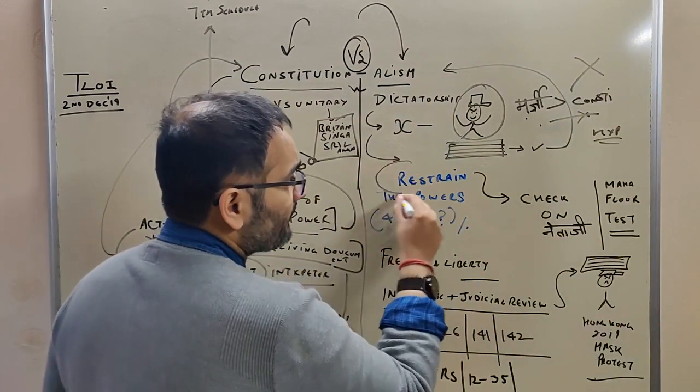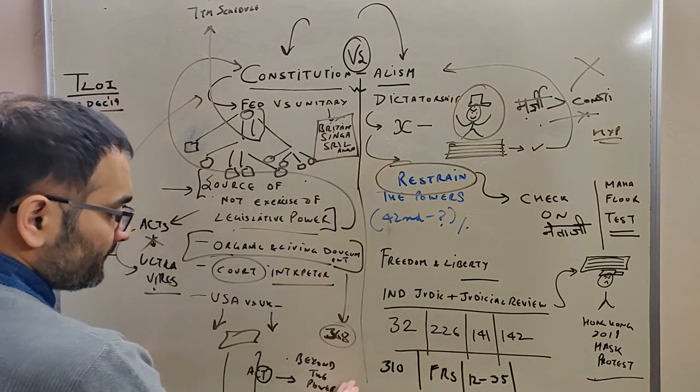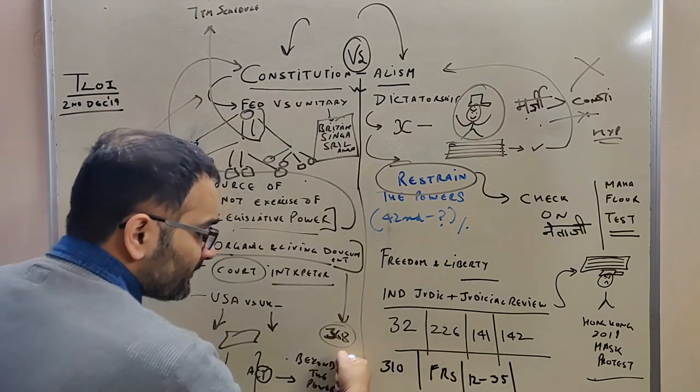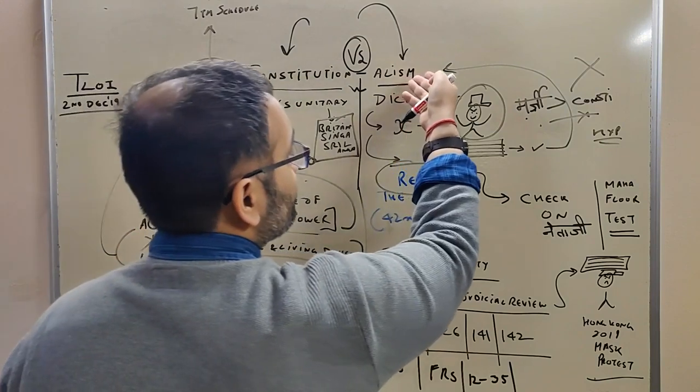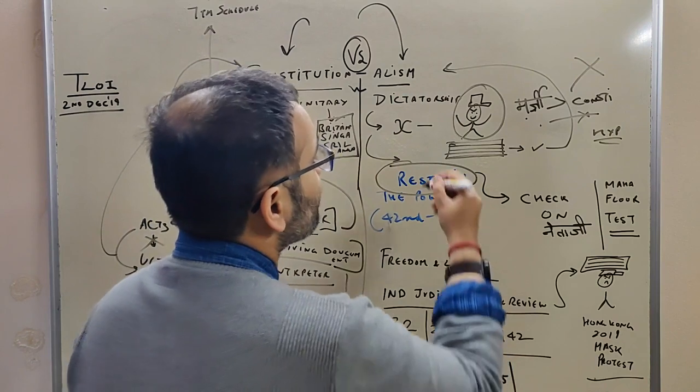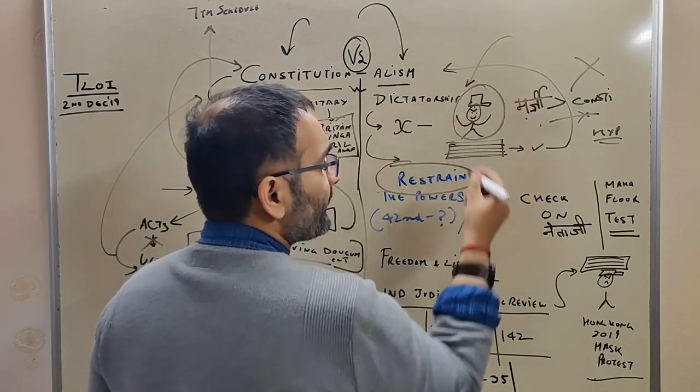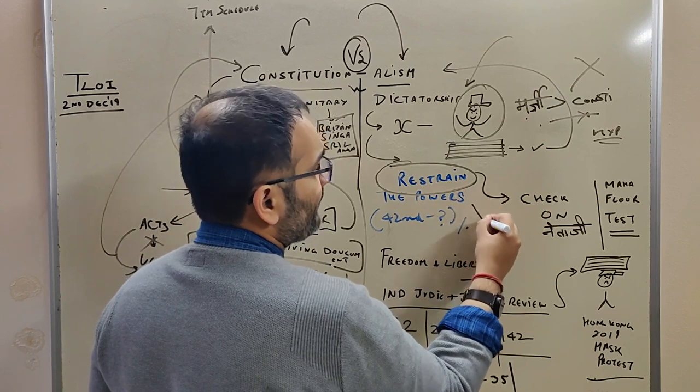Constitutionalism is all about restraint. So after mentioning all these points when you start with what exactly is the constitution, then only can you get to constitutionalism. That's why the answer will be a bit lengthy, that's why you'll get marks. That's how mains will be cleared. So you write this dictatorship example and then you write about restraint of powers.